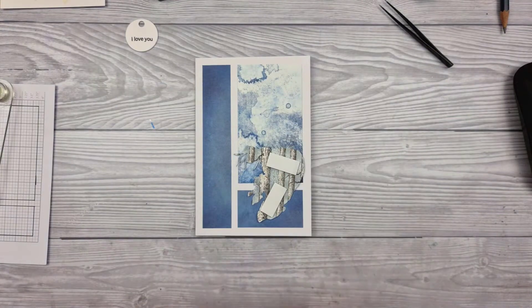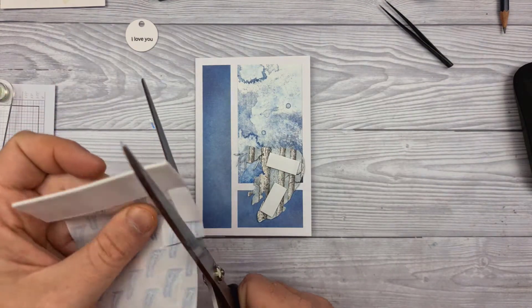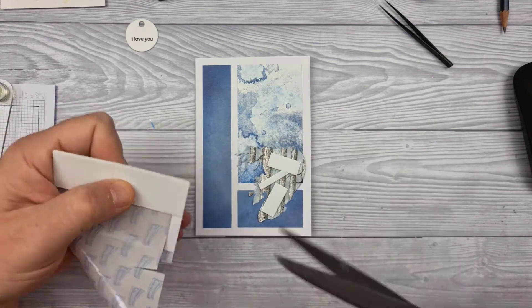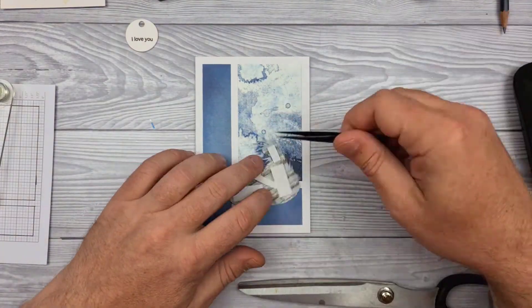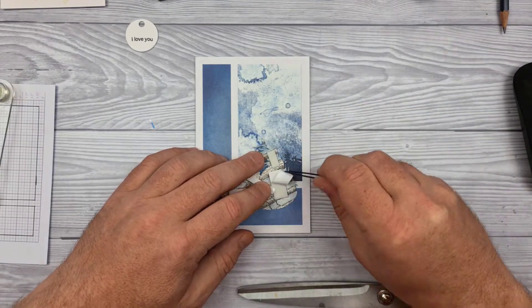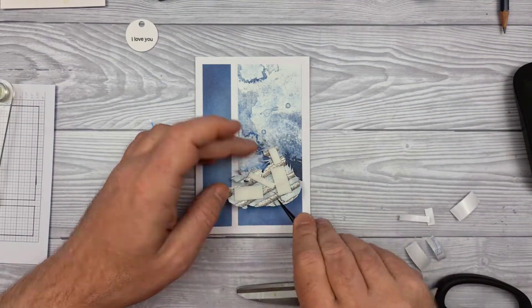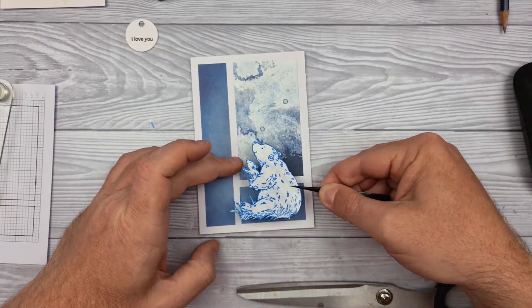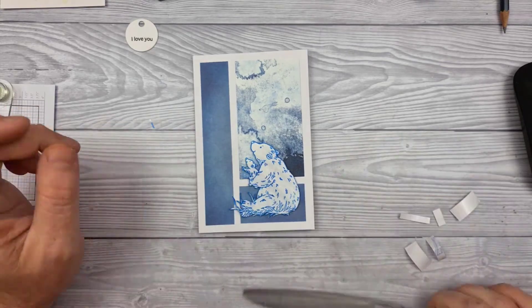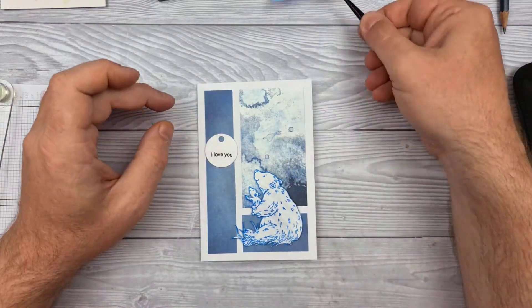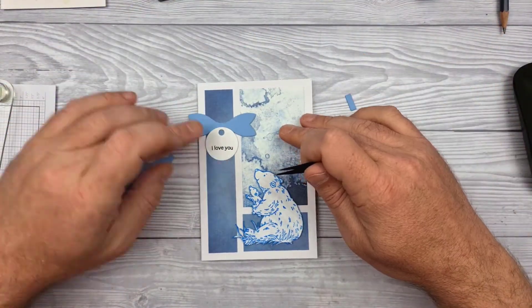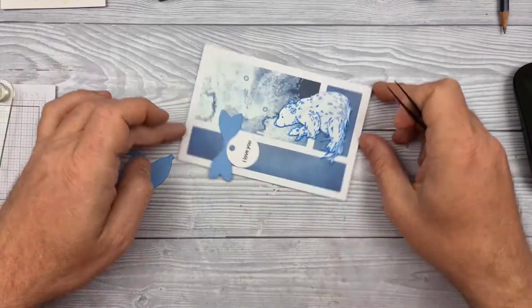I'm going to raise this up with foam pads so it's sitting proud of the card. It's always a good idea to give your focal point something different to the background, and that way it draws the eye. Oh, it's very designy in here today, isn't it? Okay, now the bow is going to sit on there and the tag will basically be underneath it, but I thought it would be nice to put a strip of gems up the side.